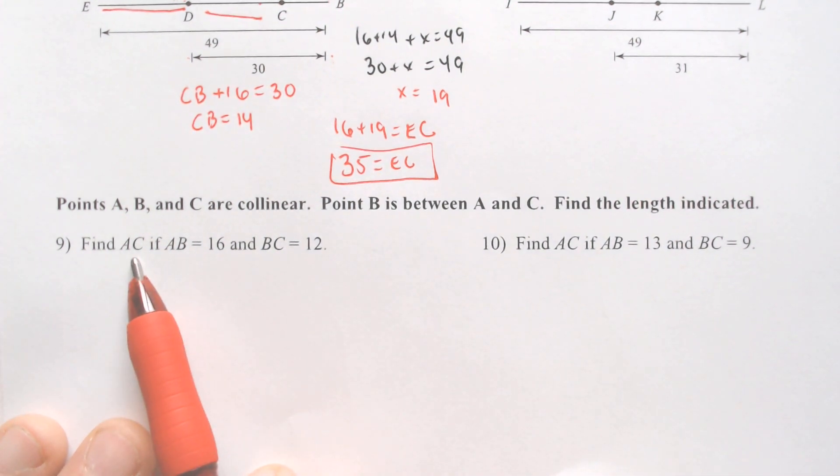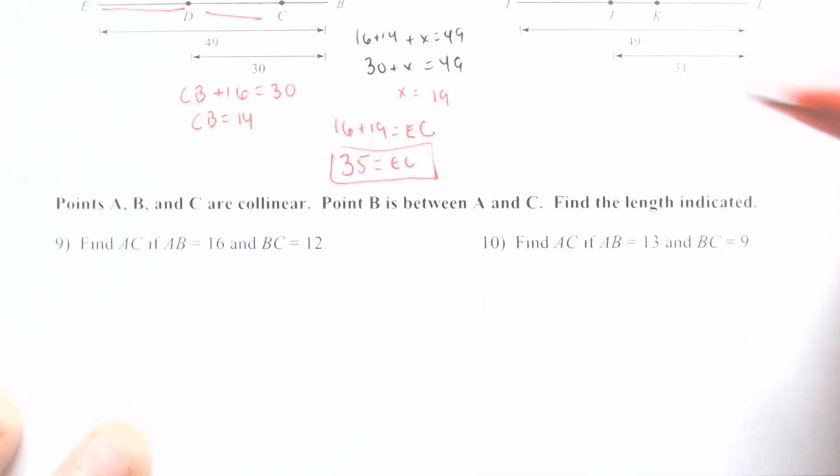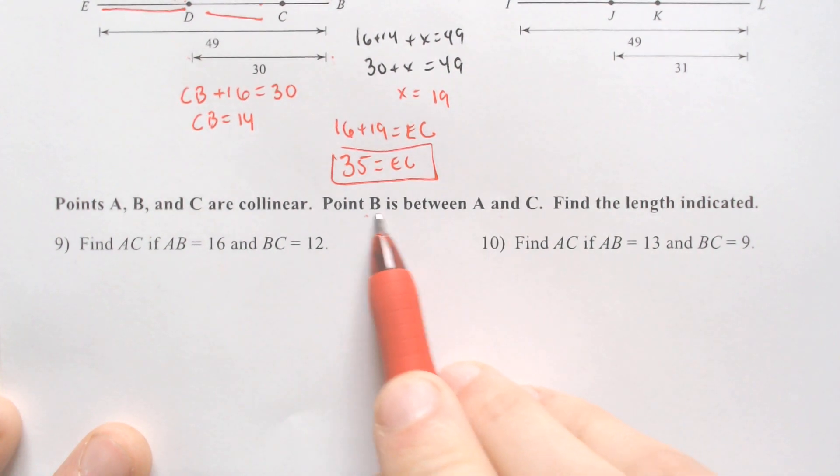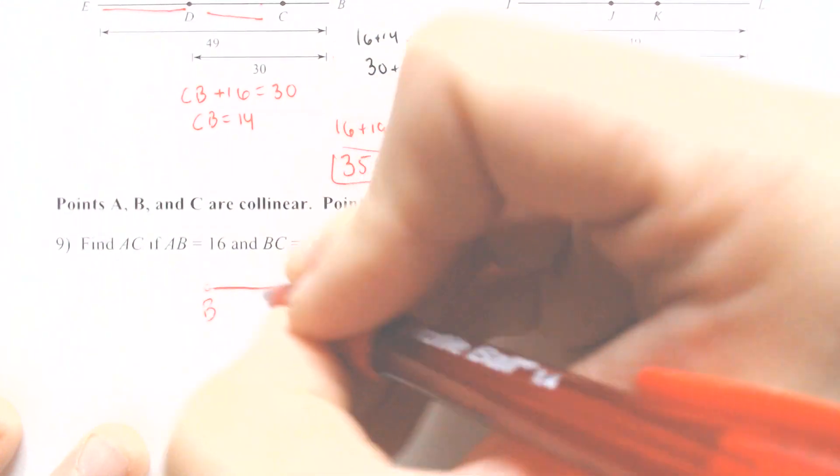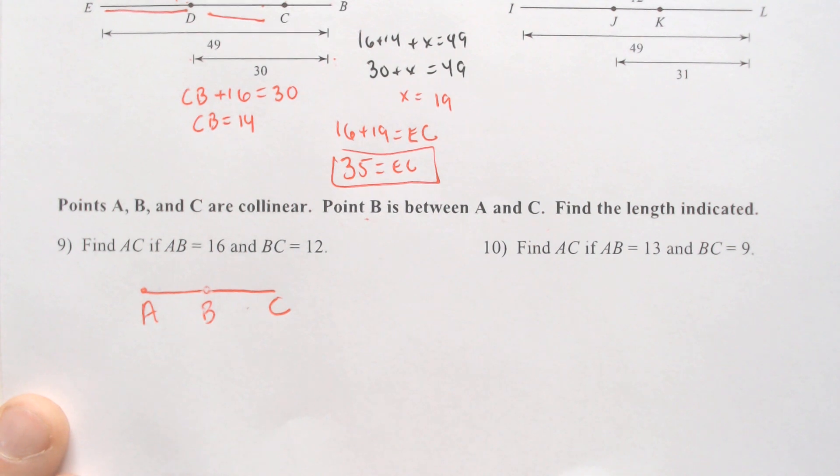If we have A to C is what we're looking for, we are provided A to B and B to C. I always recommend reading further because point B is perfectly between A and C. So you just need to put a point B in between an A and a C. It doesn't matter exactly how well you draw it, but it does need to be in between A and C somewhere.